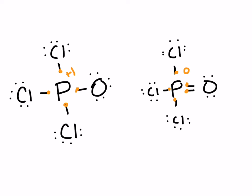Looking at the chlorines: the chlorine in every structure is the same — it should own seven and it does own seven, so all chlorines have a formal charge of zero. For the oxygen in the first structure: it should own six but owns seven, so it's negative one. In the second structure the oxygen owns six, so it has a formal charge of zero.